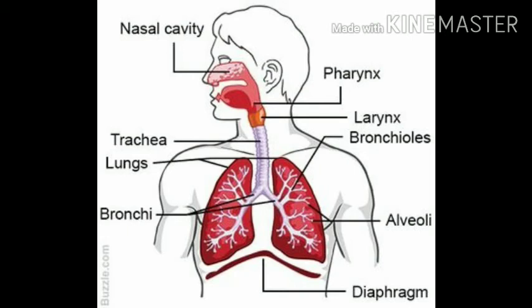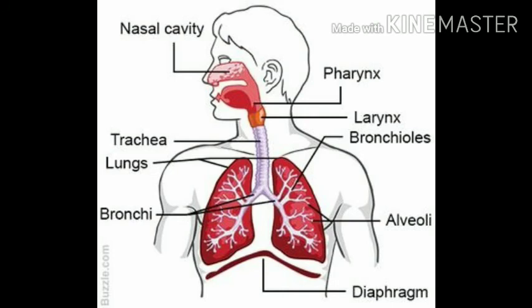The next organ is the pharynx. As you can see in the diagram, the pharynx is present above the larynx. The air passes behind the mouth into the pharynx, or throat, which is a common passage for both air and food. It leads into two passages — one for the air tube, also called the windpipe or trachea, and the other for the food pipe, also called the esophagus.